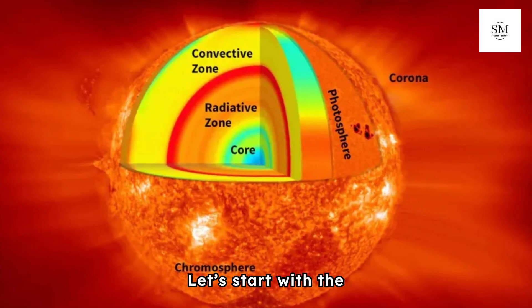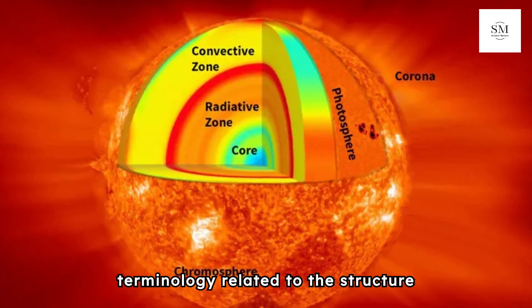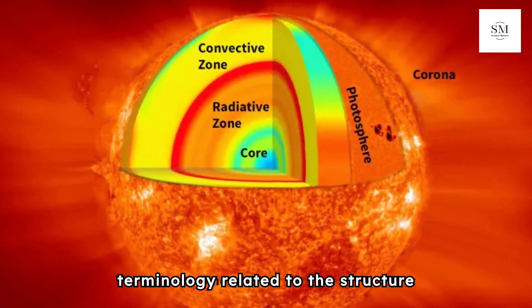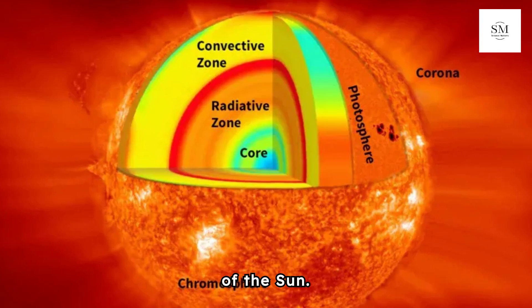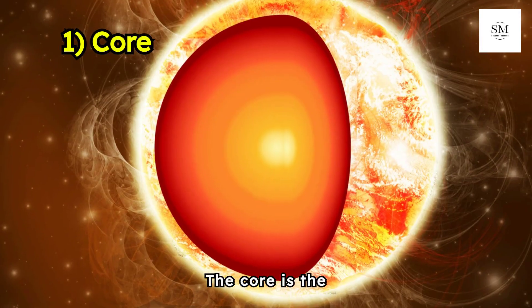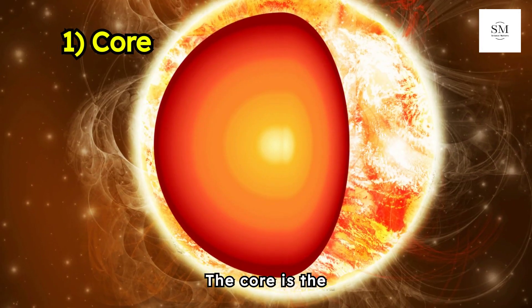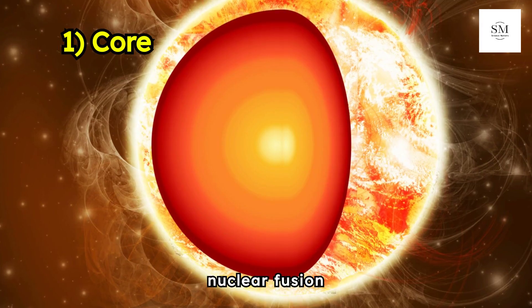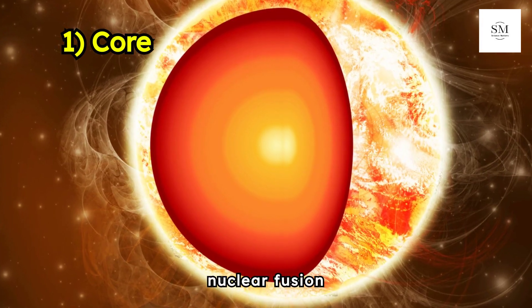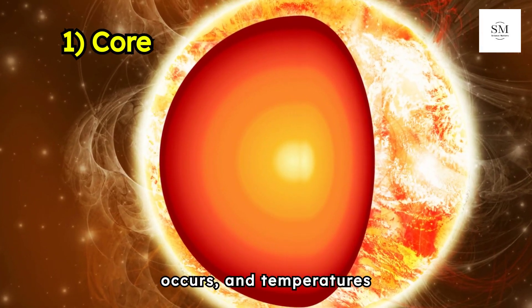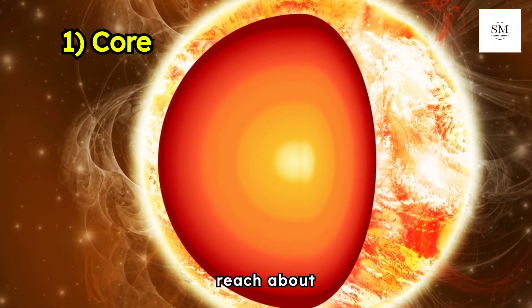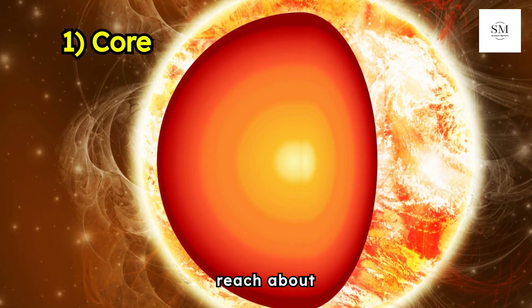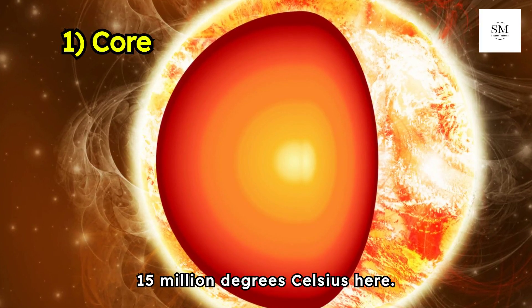Let's start with the terminology related to the structure of the Sun. The core is the innermost part of the Sun, where nuclear fusion occurs, and temperatures reach about 15 million degrees Celsius here.